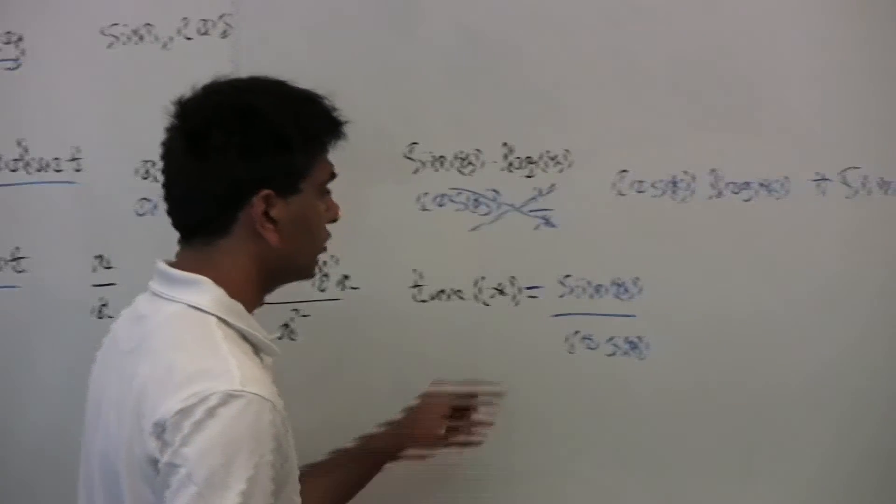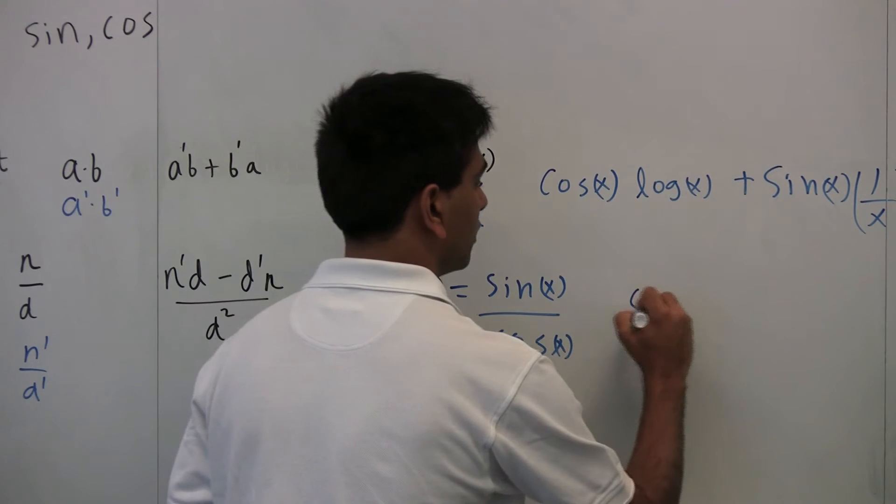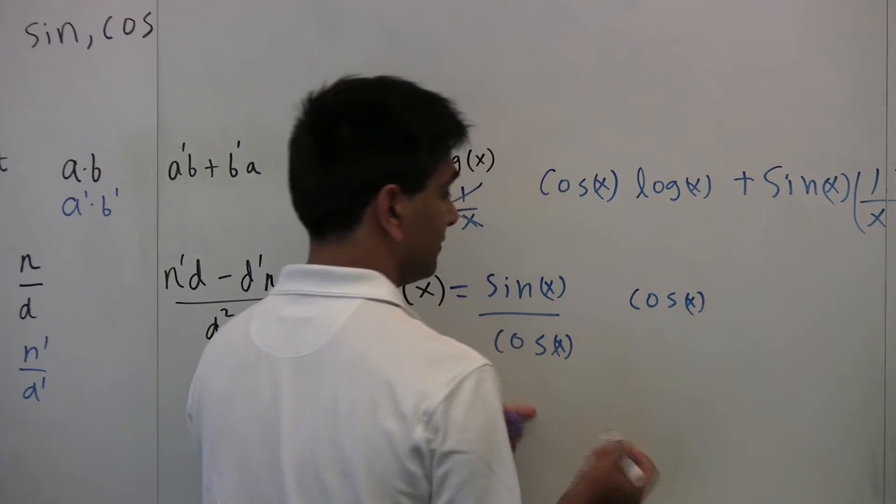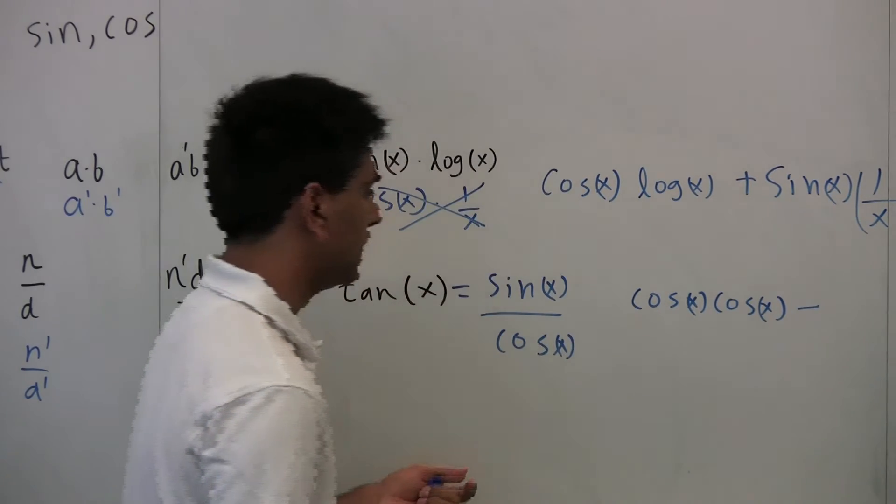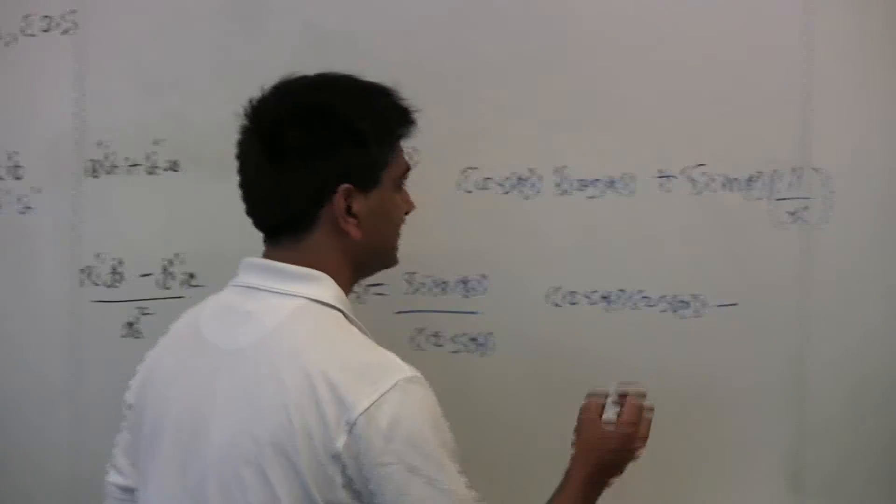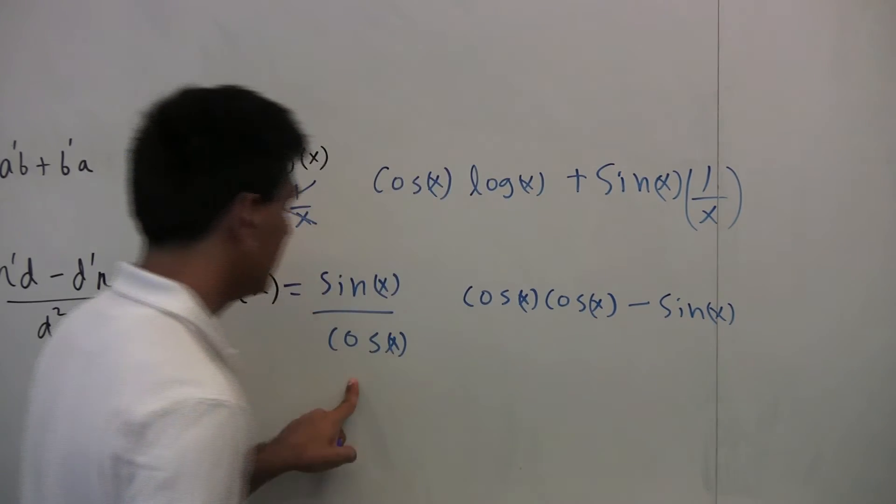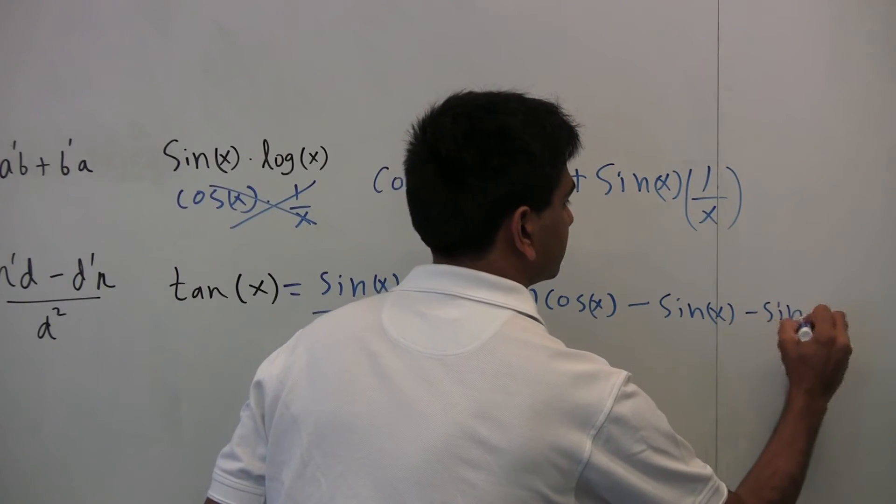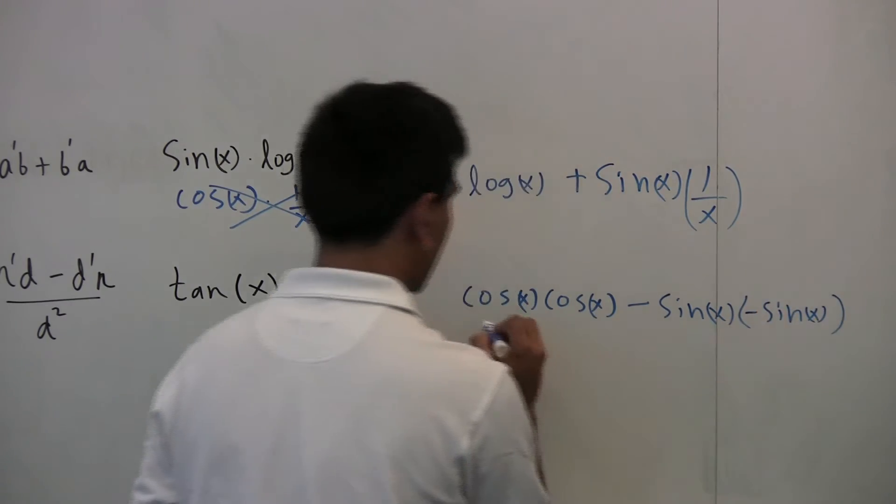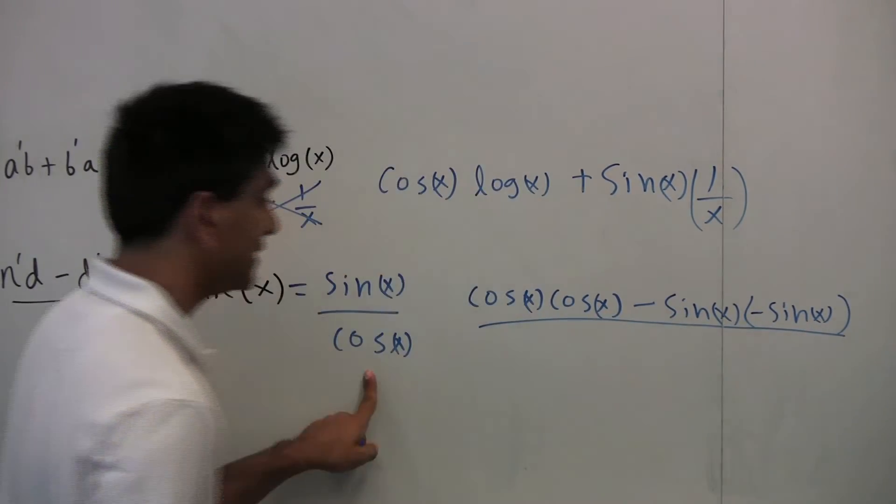Applying the quotient rule, we'll take the derivative of the first guy, which is cosine of x, divided by the second guy, which is also cosine of x, minus, now the other way around. Now just write the first guy as is, sine of x, times the derivative of the second guy, which is negative sine of x. Now just all that thing divided by the denominator squared.